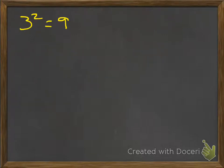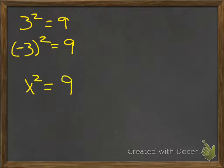Now, 3 squared equals 9, but also negative 3 squared equals 9. So algebraically, when x squared equals 9, to solve for the variable, you do the opposite. The opposite of a square is a square root.